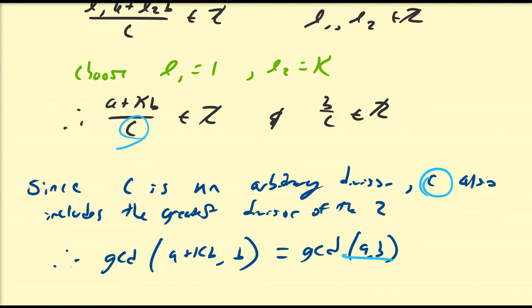Since C is an arbitrary common divisor of A and B, C is also an arbitrary common divisor of A plus KB and B. We can choose that arbitrary divisor to be the greatest common divisor of the two, and that gives us the conclusion we want: GCD(A + KB, B) = GCD(A, B). These are some very important properties, especially this last one, associated with the divisibility of integers. We're going to revisit these theorems a little bit later, so I hope you enjoyed.